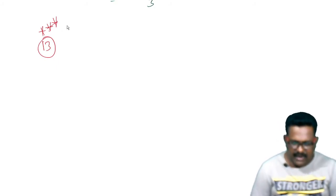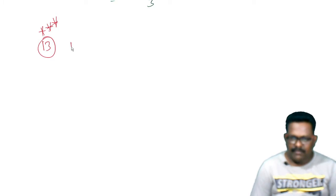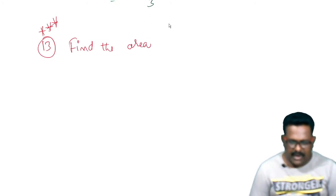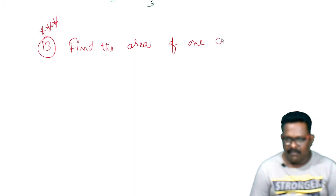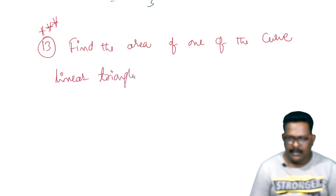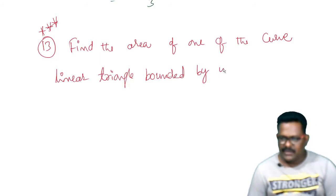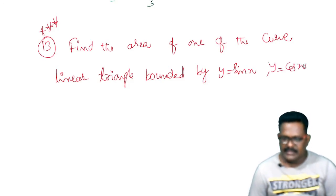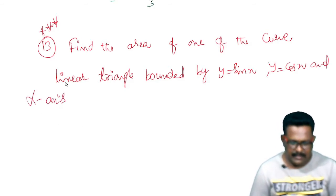Find the area of one of the curvilinear triangles bounded by y is equal to sin x, y is equal to cos x, and the x-axis.